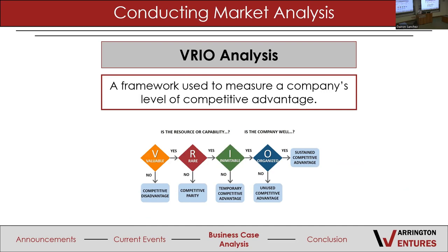The VRIO analysis is another way to determine and quantify how big your economic moat is. Is your product valuable? Is it rare? Can it be imitated? And is the organization organized around it? These factors map back to Porter's forces: imitability relates to the threat of substitutes, rarity relates to supplier bargaining power, and value relates to consumer demand. Together, VRIO determines the size of your economic moat and where you can see it going in the future.